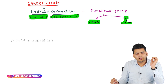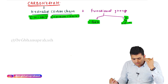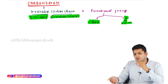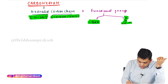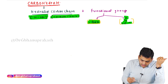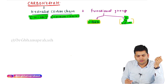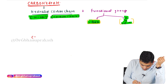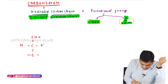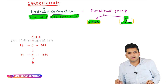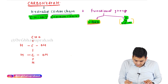Let's make the smallest possible carbohydrate — once using the aldehyde group and once using the keto group. With the aldehyde group: the molecule has the aldehyde group, then the carbon chain, then the hydration part HOH. This is the smallest possible carbohydrate using aldehyde as a functional group.